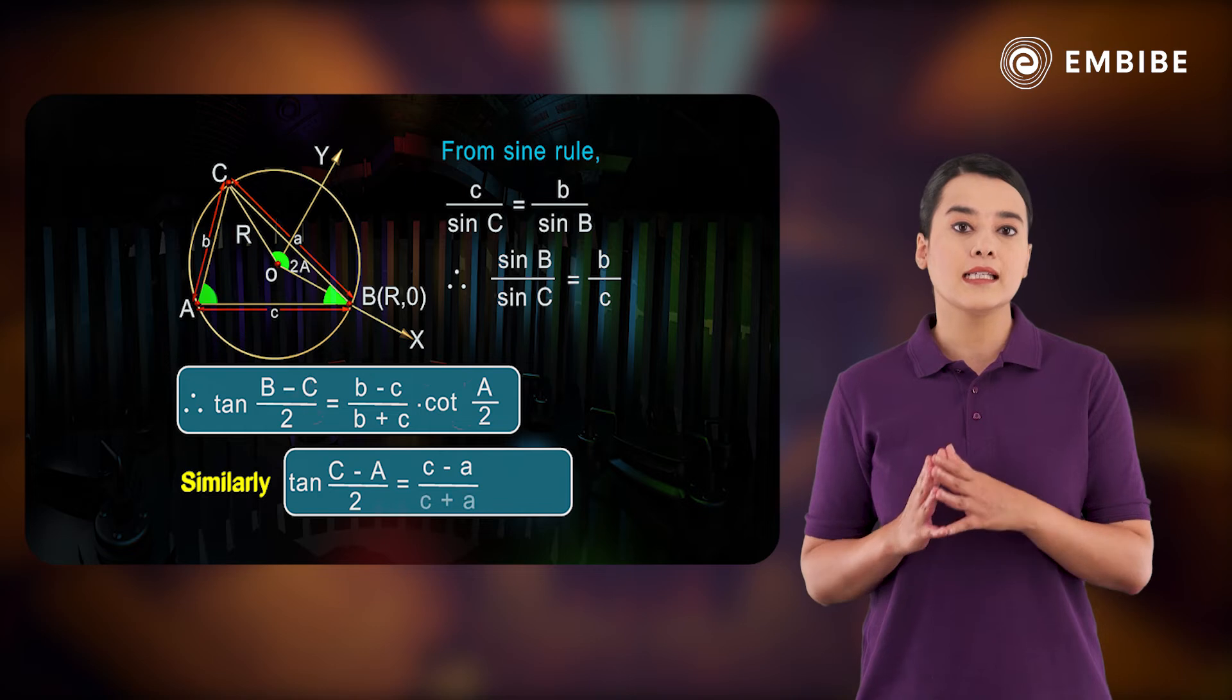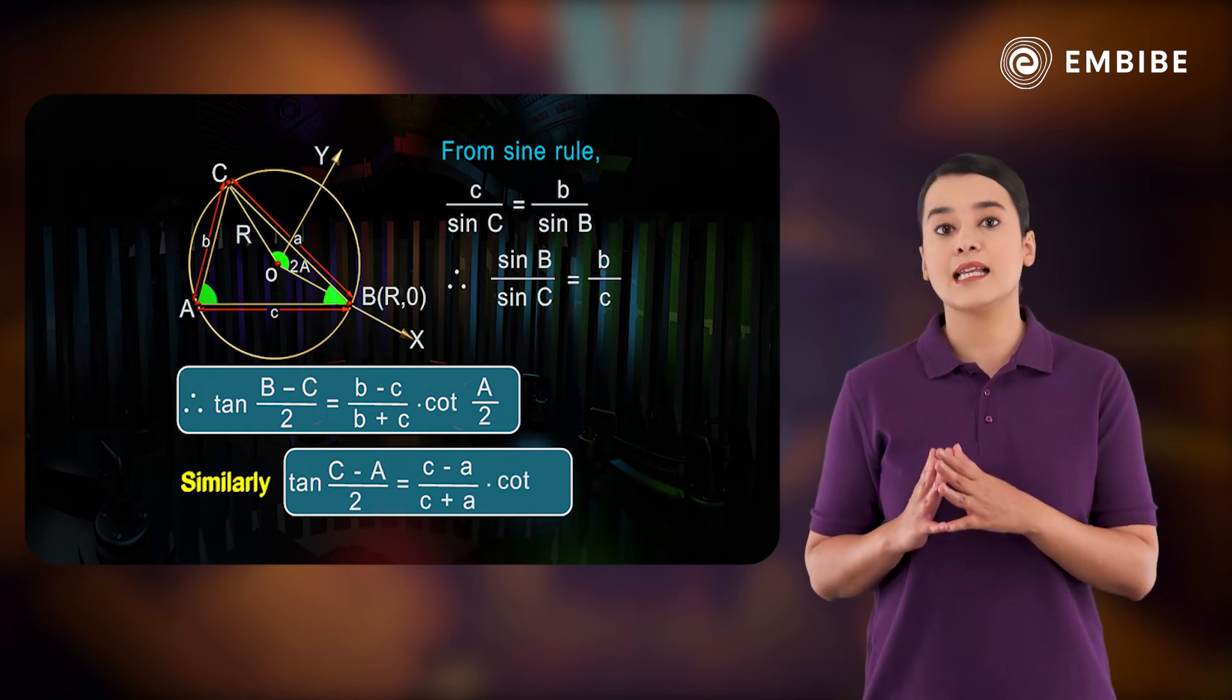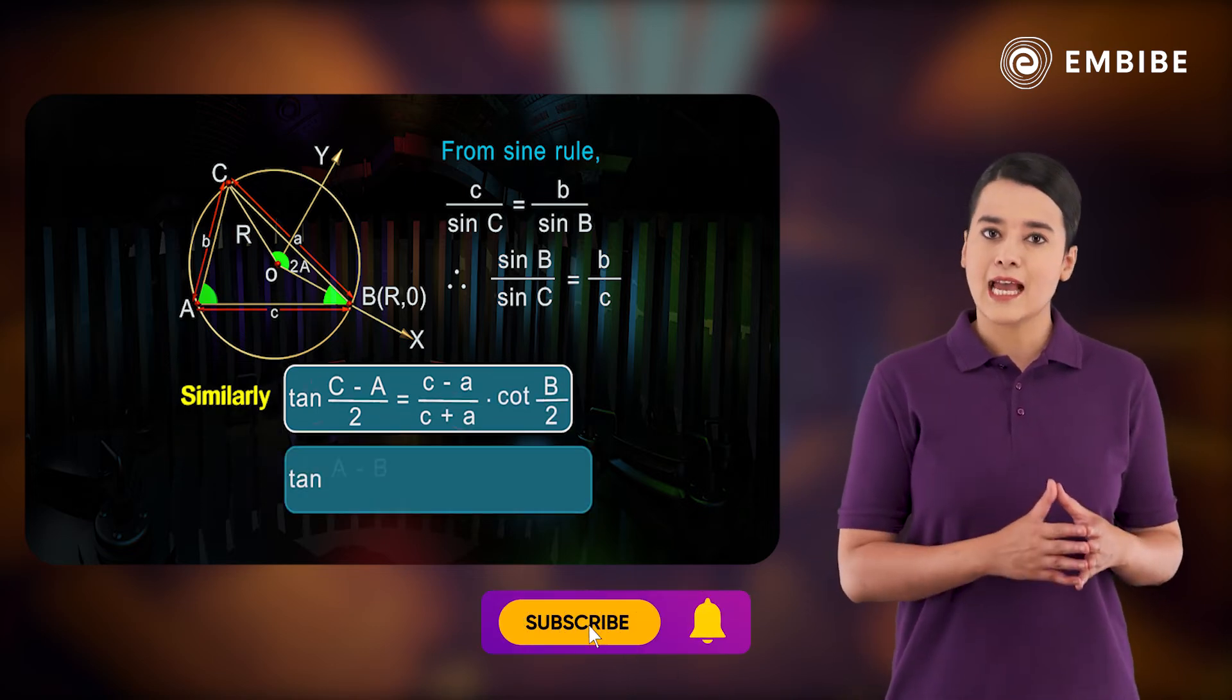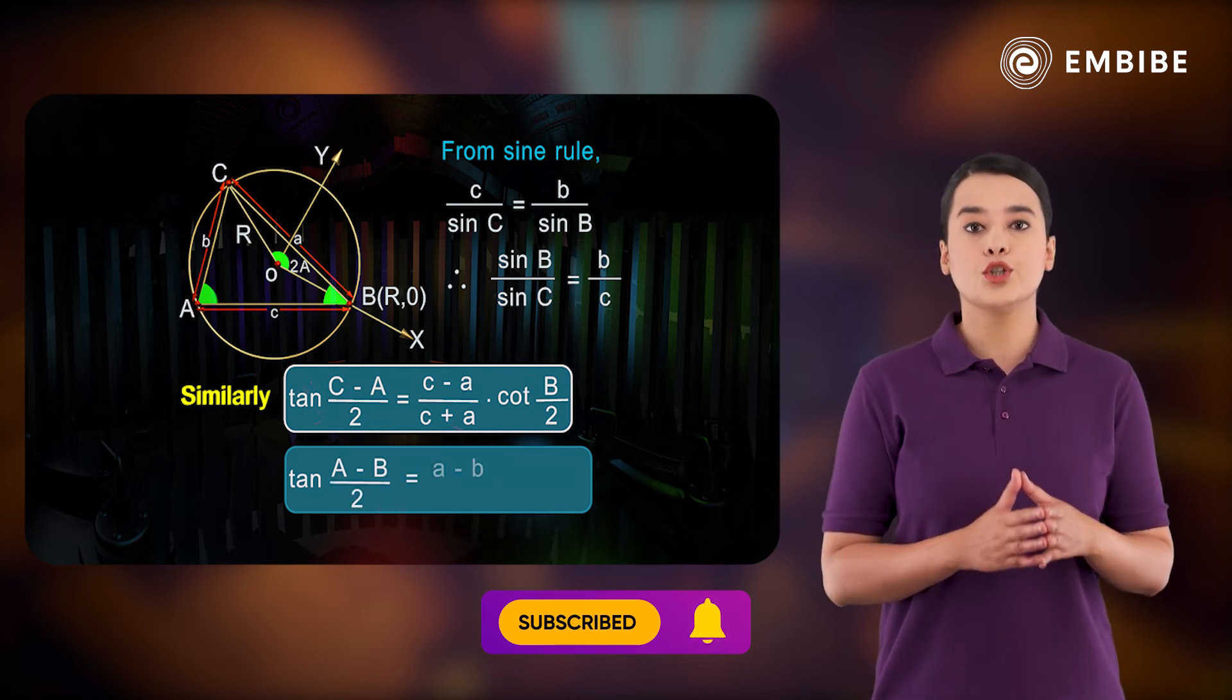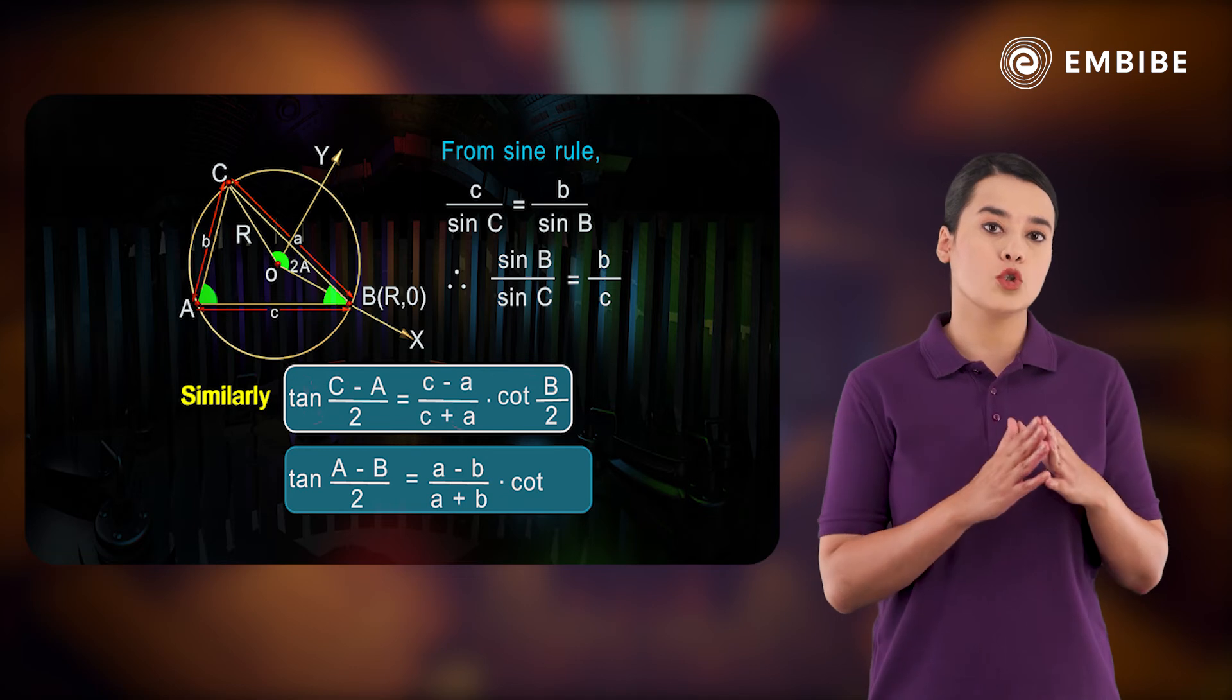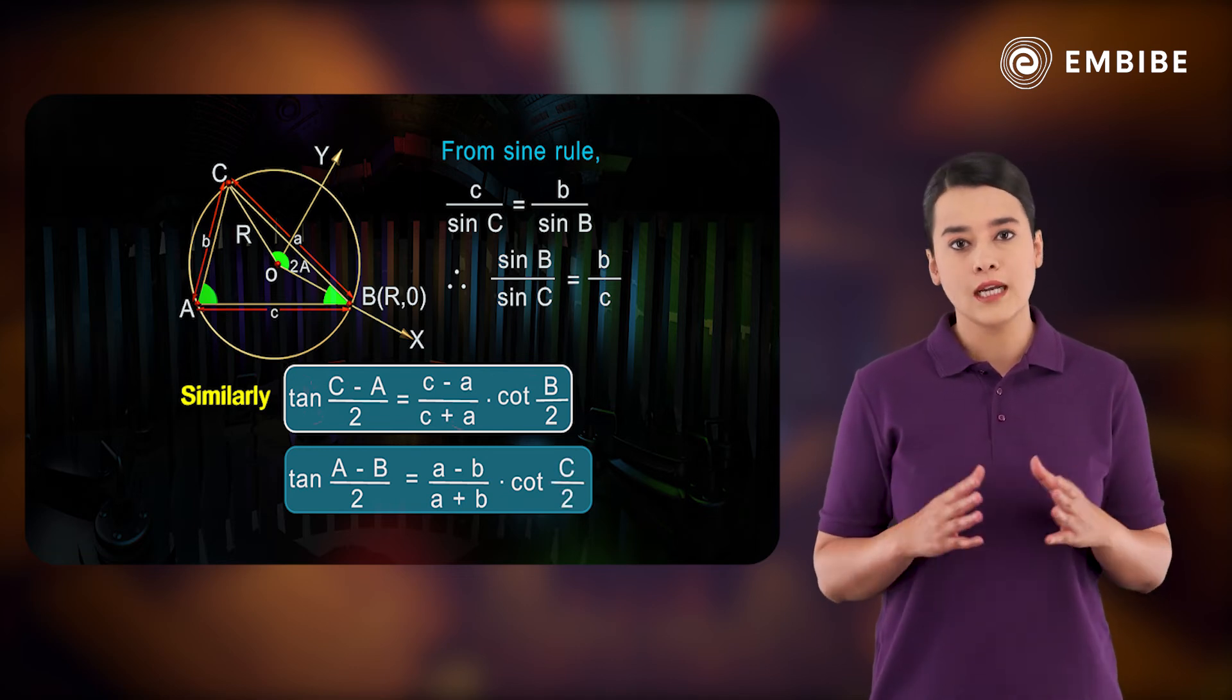Tan of A minus B over 2 is equal to a minus b over a plus b times cot C over 2 can be obtained.